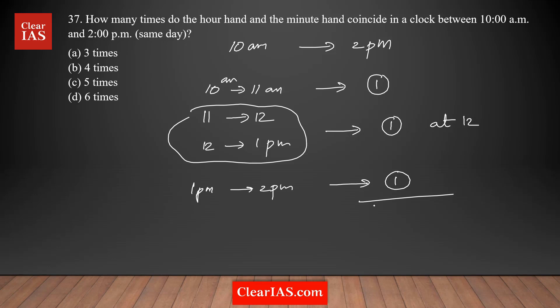So the total is going to be in this time frame, the total number of times both hour hand and minute hand coinciding is three times. This is a simple question. Your answer is option A is the right answer for this question.